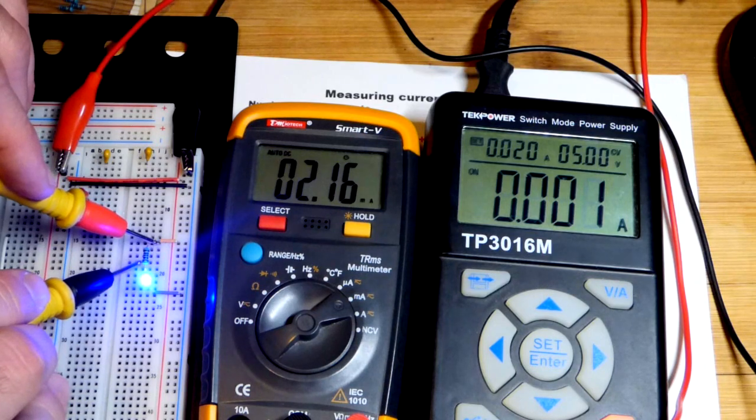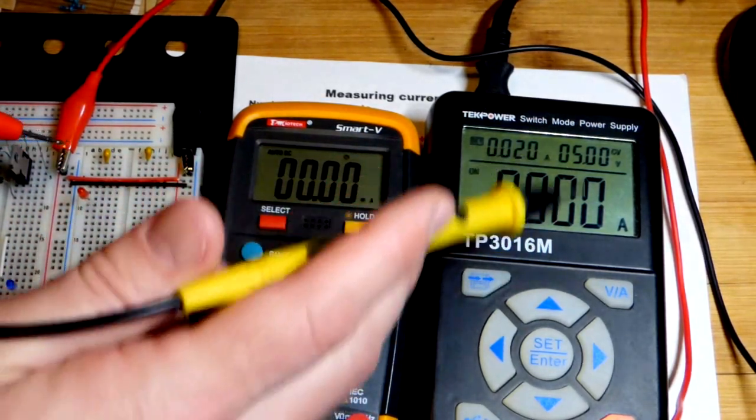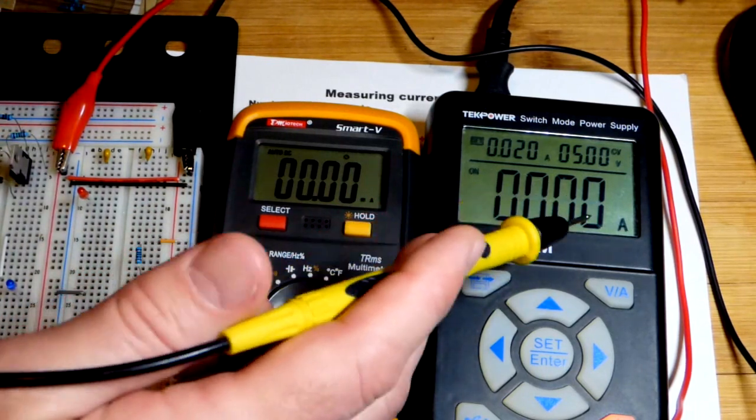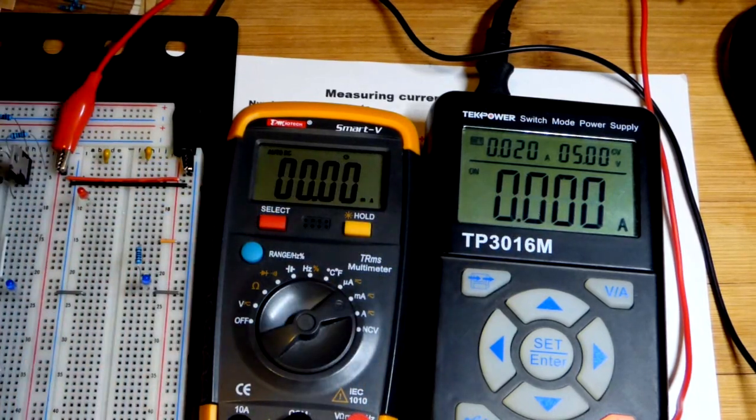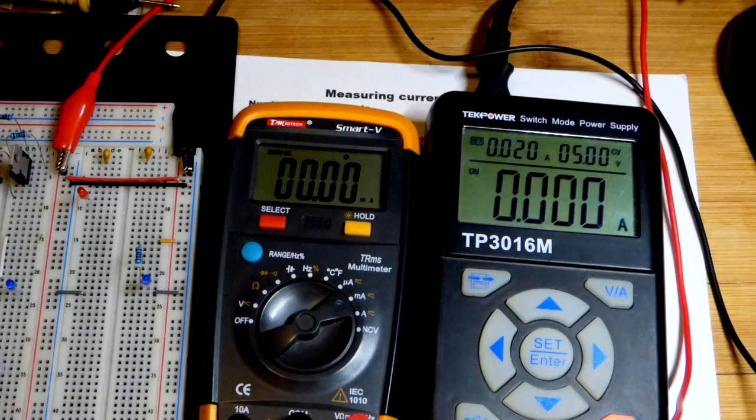It doesn't matter, they're in series that's what matters. Again I use the current on the display here all the time in my videos. I usually point out it's probably about a milliamp off. Looks like it's usually about a milliamp lower than what you would have seen if you used a multimeter. But still it's usually close enough for most of the stuff that I'm doing.